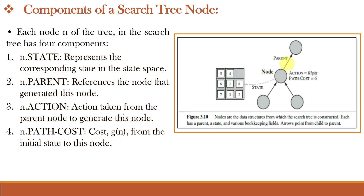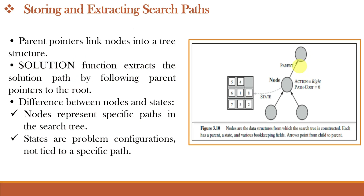For example, in this figure, the parent pointers string the nodes together into a tree structure. This node is a bookkeeping data structure used to represent the search tree. Each node has a parent, a state, and various bookkeeping fields as shown here. These arrows point from the child to the parent — these two children are pointing to this parent and similarly this child points to this parent. The parent pointers in each node help form a tree-like structure keeping track of how states are reached. Once a goal state is found, we reconstruct the solution path by backtracking through parent pointers using the solution function.